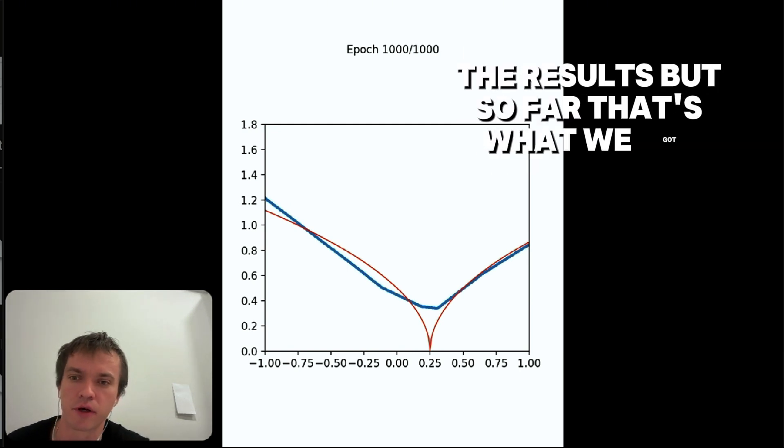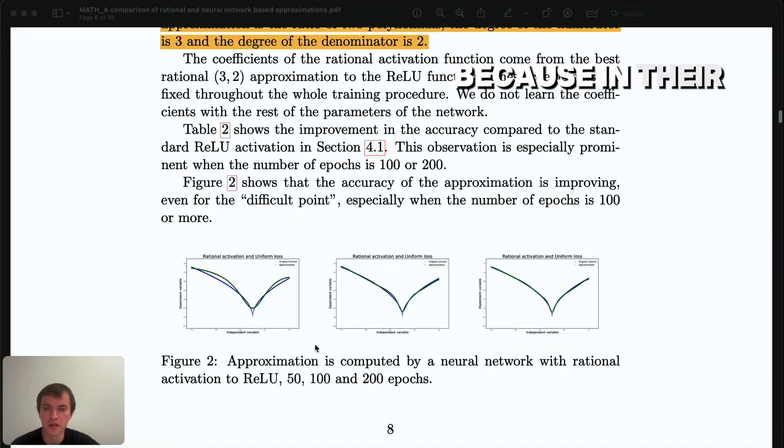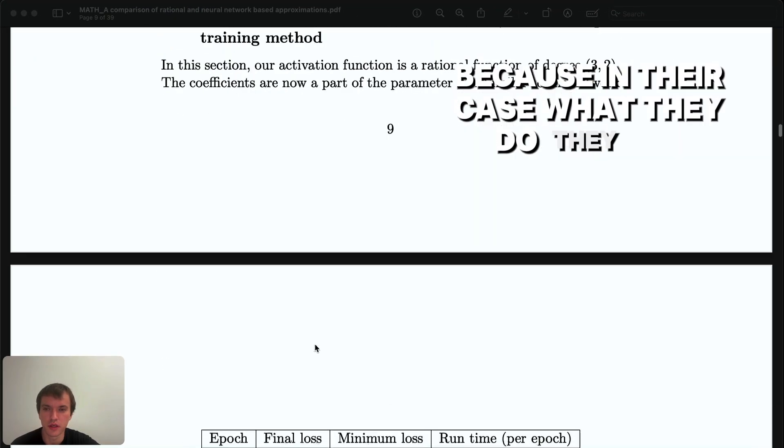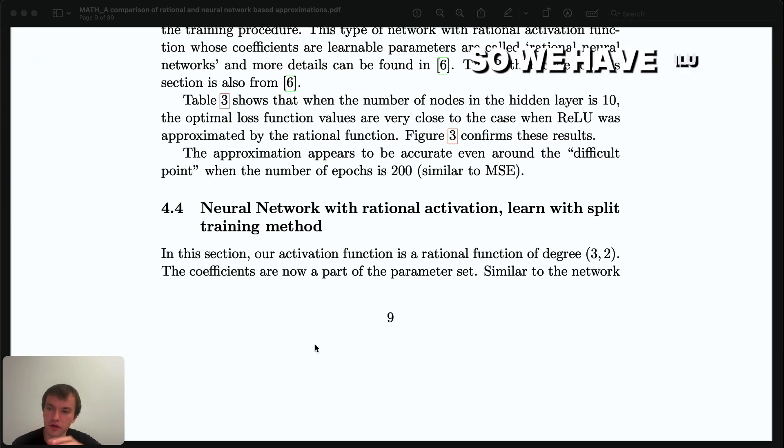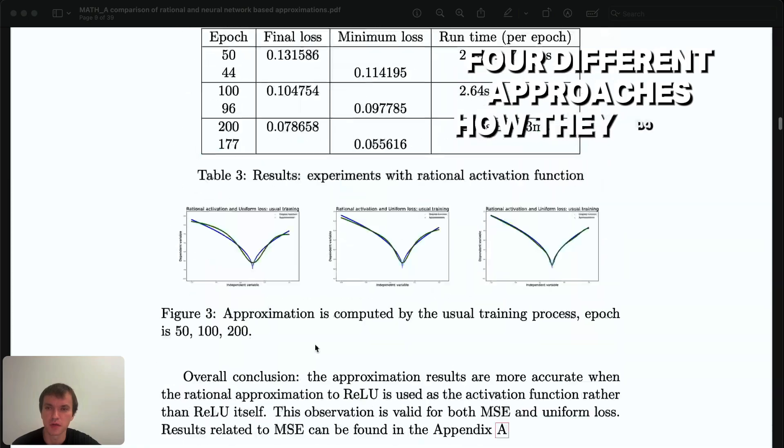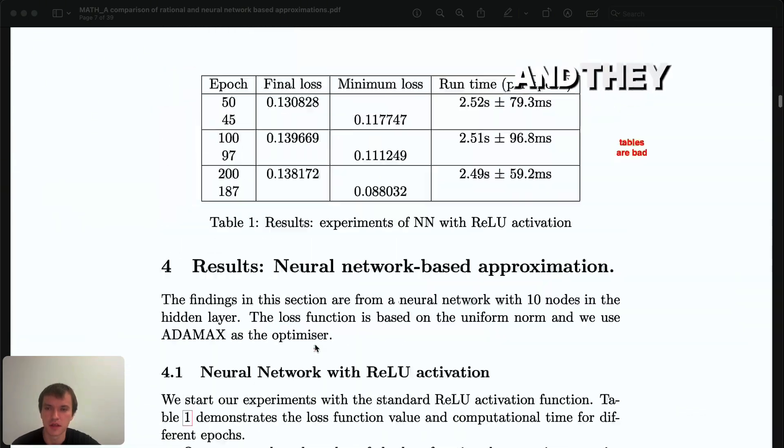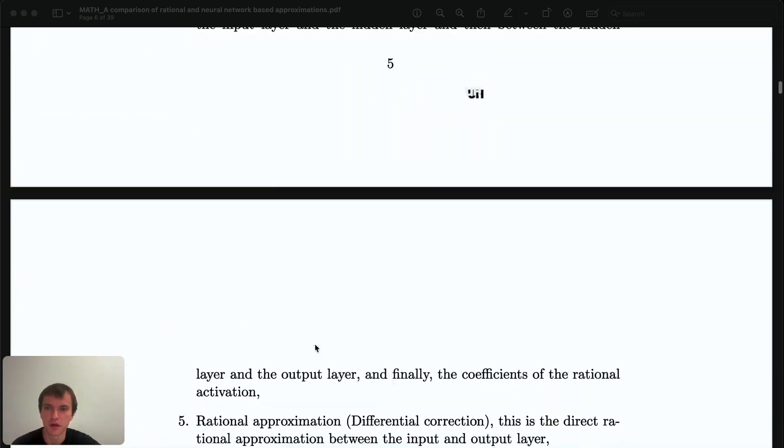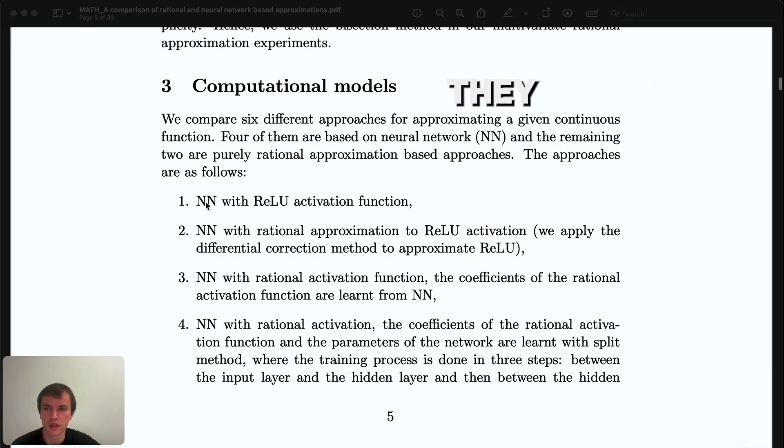But so far that's what we got because in their case what they do is use—we have ReLU activation function—and they use four different approaches how they do the experiments. They mention them over here, so what they do is train neural network with ReLU activation function, so it's just x plus absolute value of x over 2.